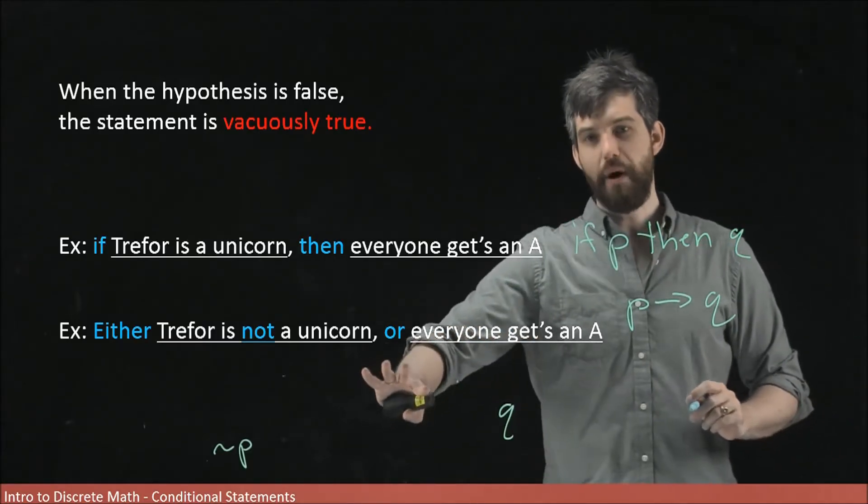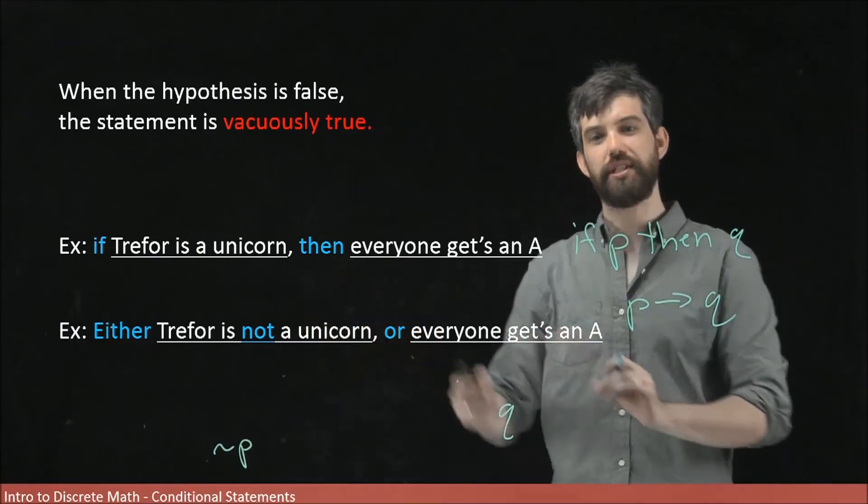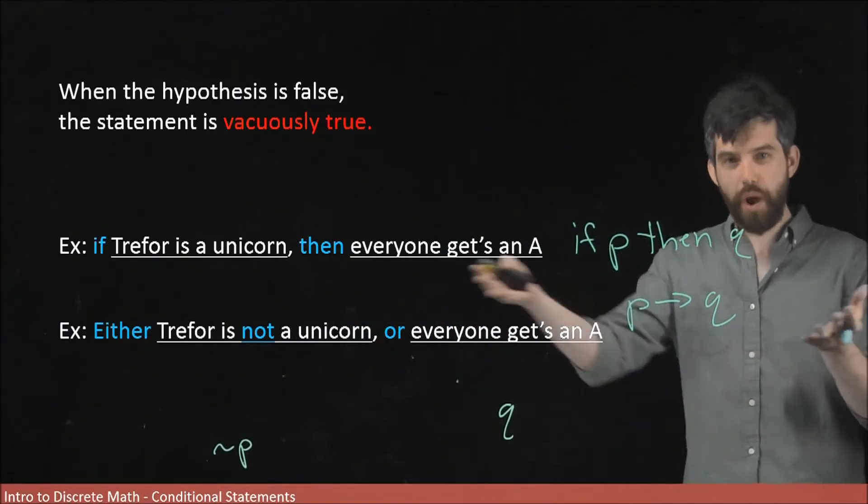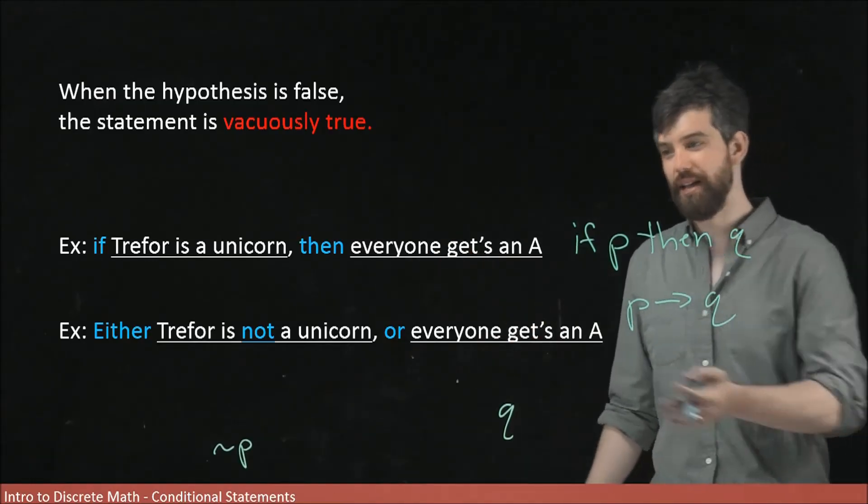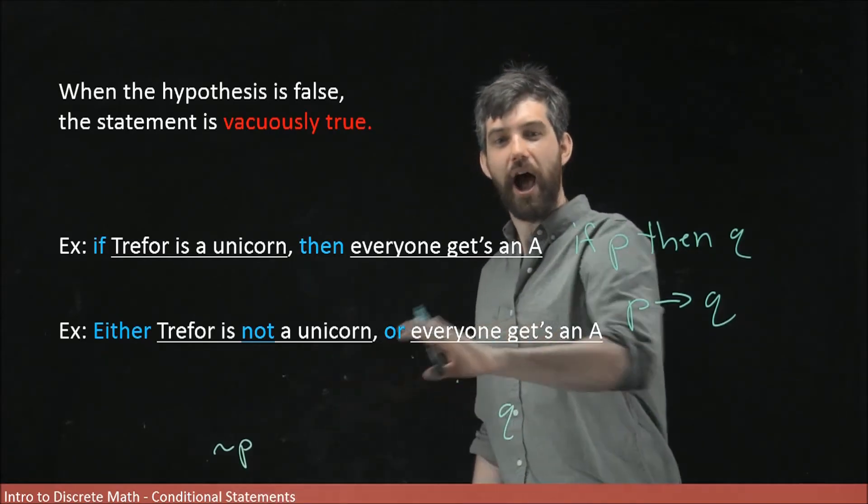When it's written in this disjunctive form, I think it's more obvious that we should say that is true. Either Trevor is not a unicorn, or everyone gets an A. One of those two things is true. It turns out to be, fortunately, the Trevor is not a unicorn one.